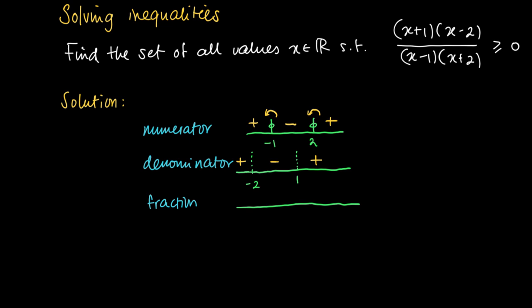Now we summarize by combining the sign schemes, including the roots of the numerator at -1 and 2, and the dashed lines at -2 and 1. Looking to the right of 2: we have a positive numerator divided by a positive denominator, so the fraction is positive — we write a plus. On the interval (1, 2) we divide something negative by something positive, which gives a negative fraction — we write a minus. We can now complete the sign scheme.